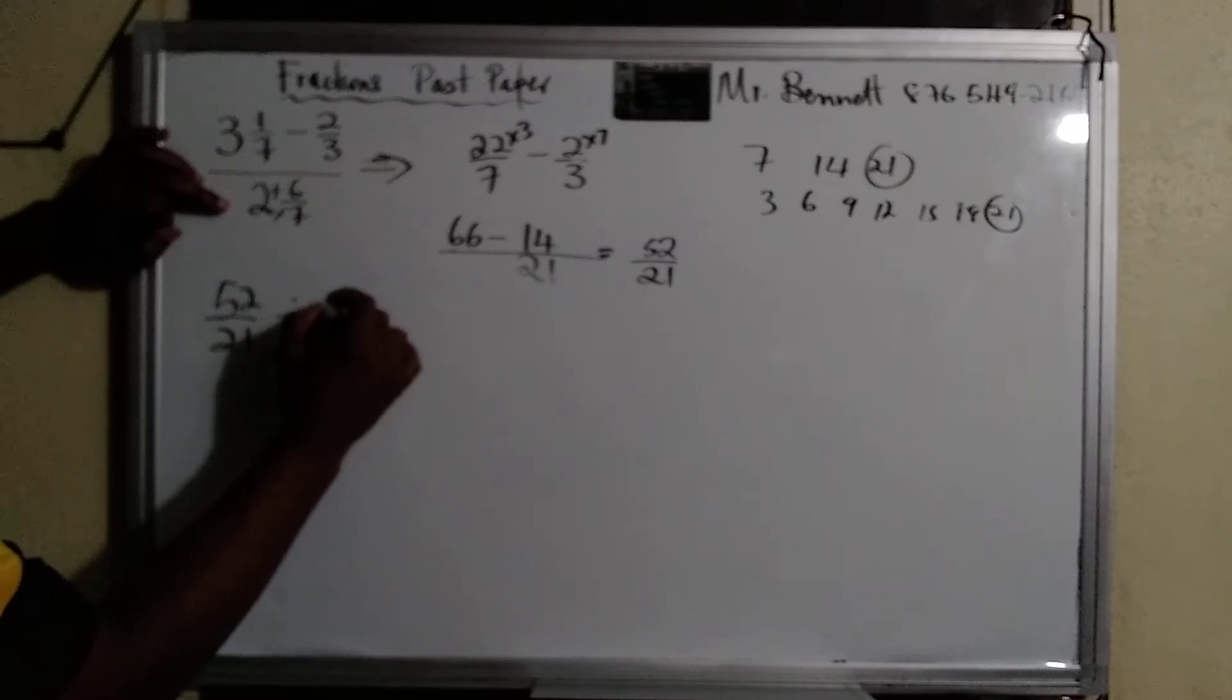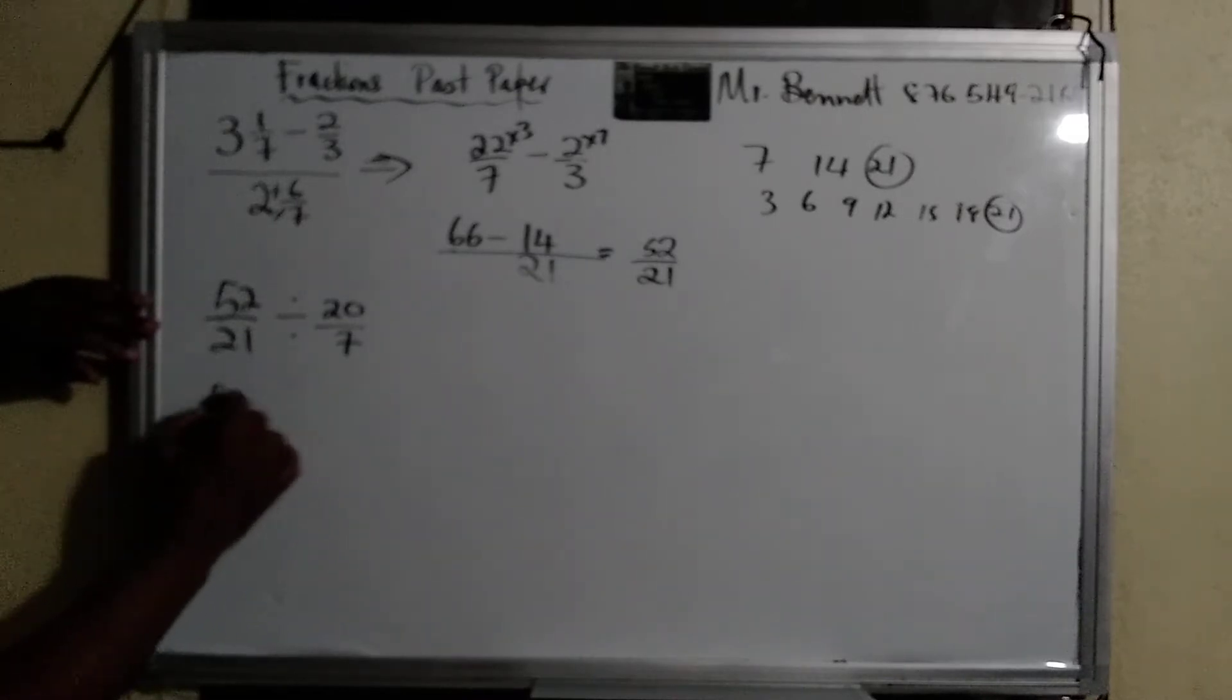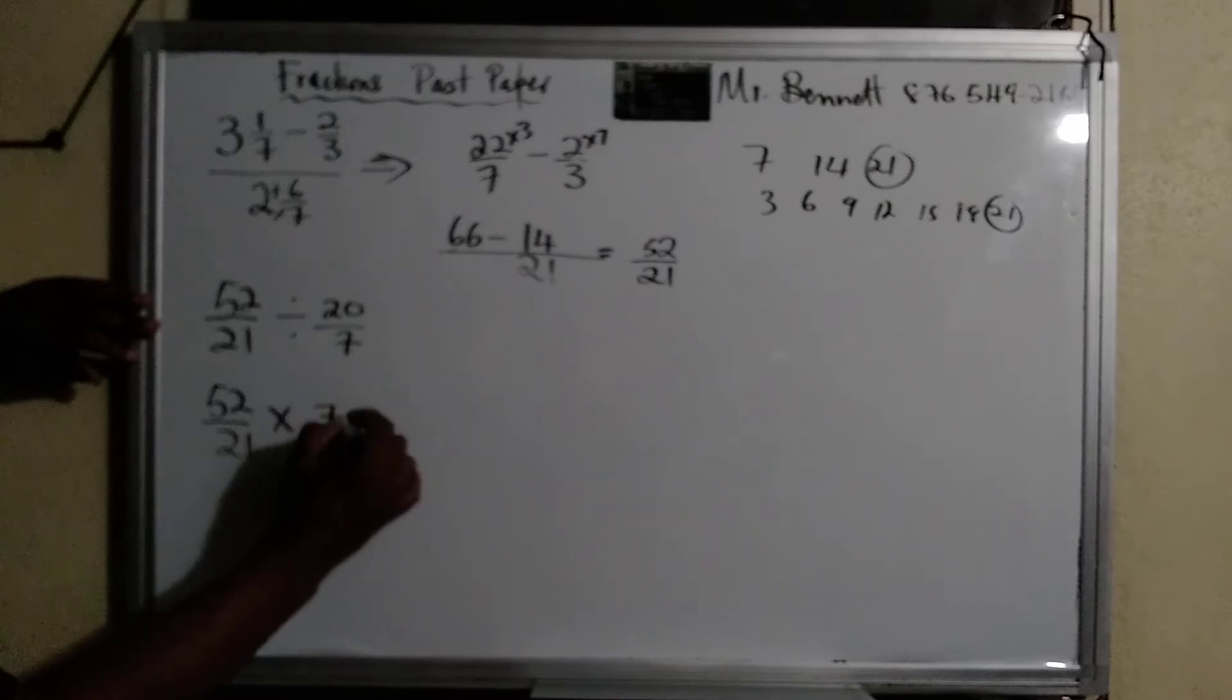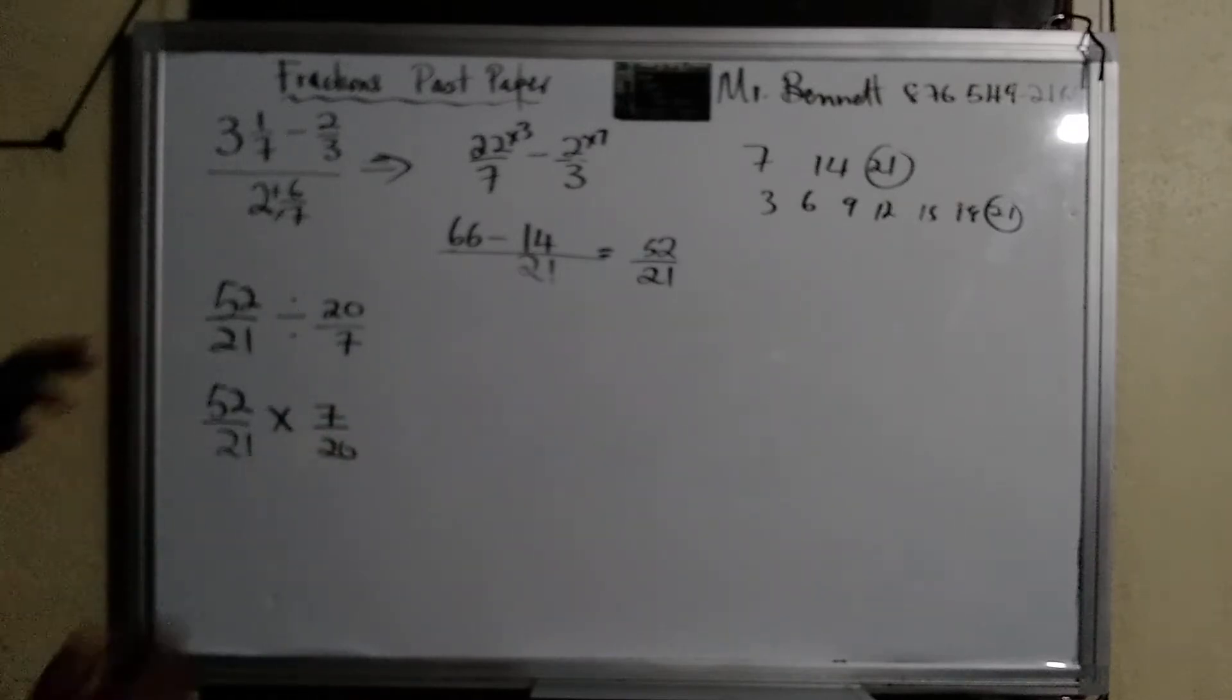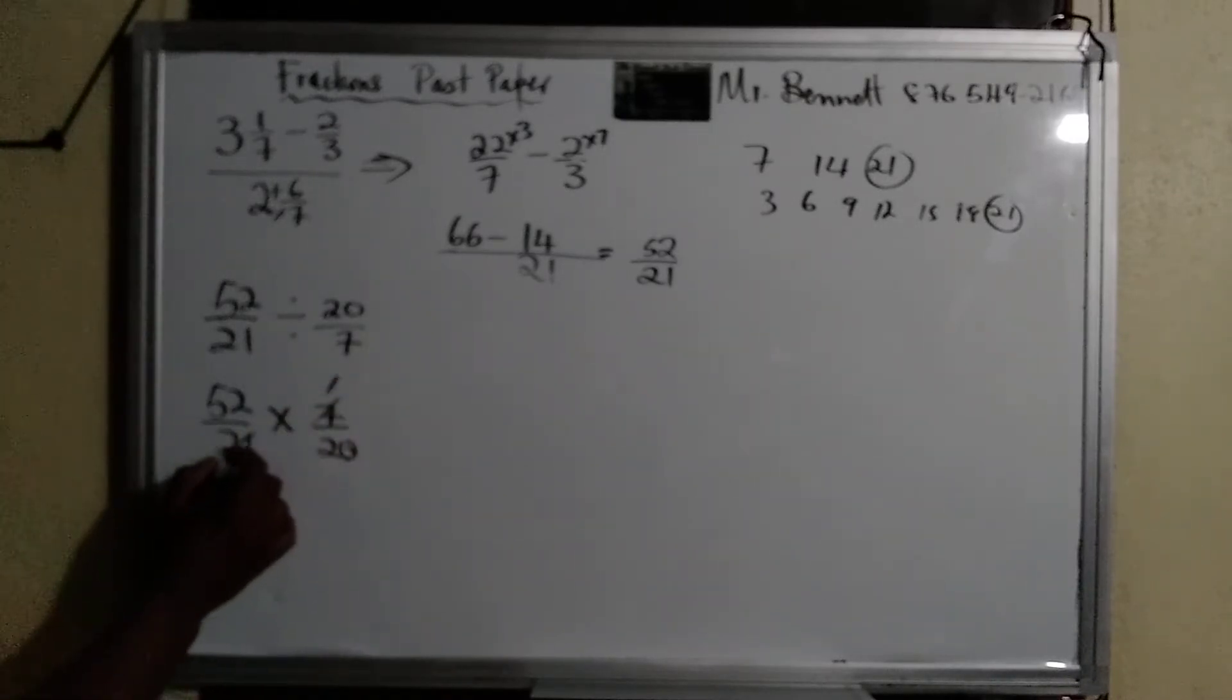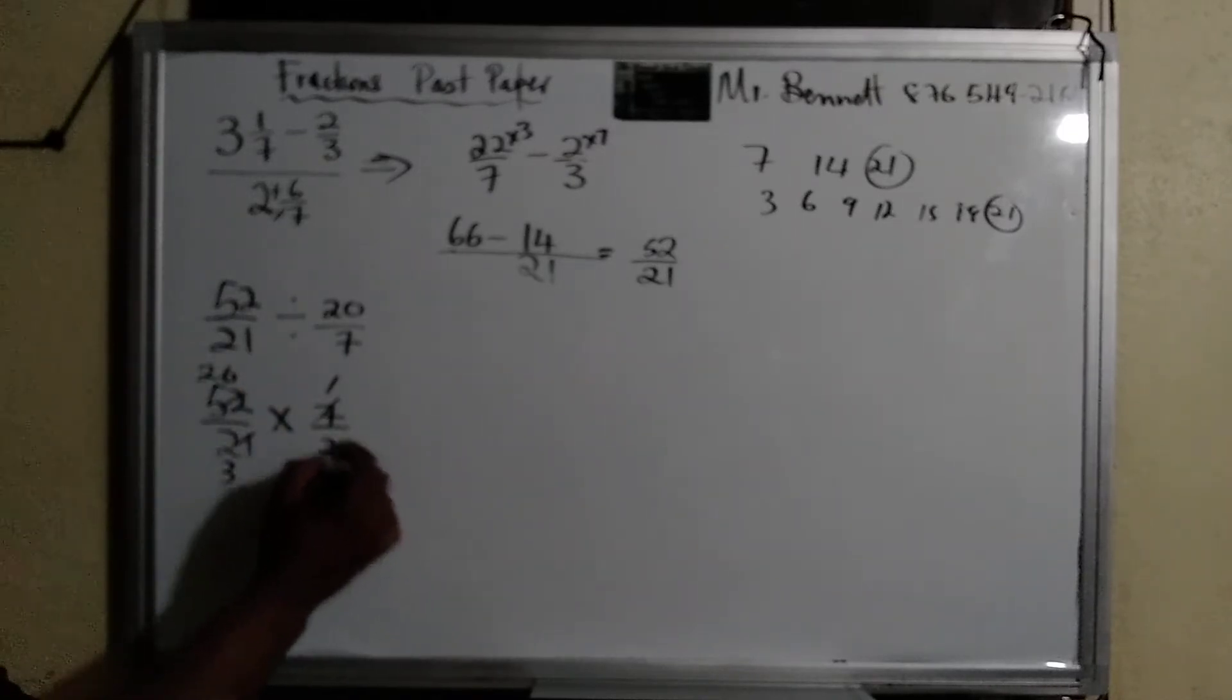So let's convert this to sevens: fourteen plus six, that's twenty over seven. Now when we are dividing, we must invert, change the sign to multiplication and invert. So it becomes times seven over twenty. Seven graders would say keep, change, flip. So let's cancel. One hundred seventy-seven... seven, one; seventy-seven, one; seven; twenty-one, three.